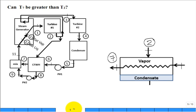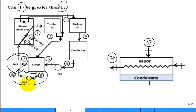What about the other design where the fluid mixes? Could T7 ever be greater than T2 there? No. Even though we changed what happens to the outlet of the heat exchanger, the constraint on the heat exchanger itself is the same. Focus on the heat exchanger — T7 cannot exceed T2 regardless of the downstream configuration.